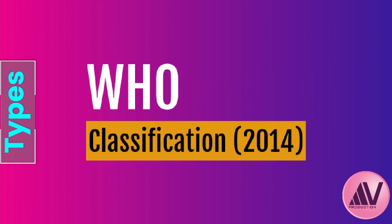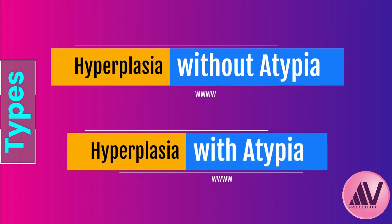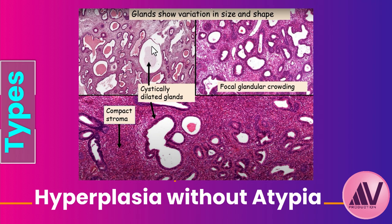The WHO 2014 classification divides hyperplasia into two main types based on microscopic appearance: hyperplasia without atypia and hyperplasia with atypia. Without atypia, the glands look abnormal — varying in size and shape, some dilated and cyst-like — but the cells lining the glands don't look particularly worrisome. The stroma is usually reduced and dense.